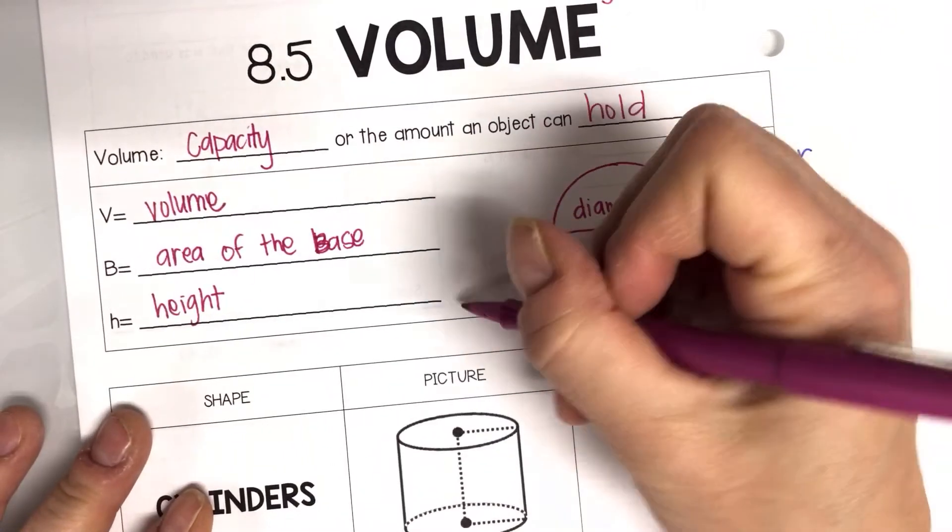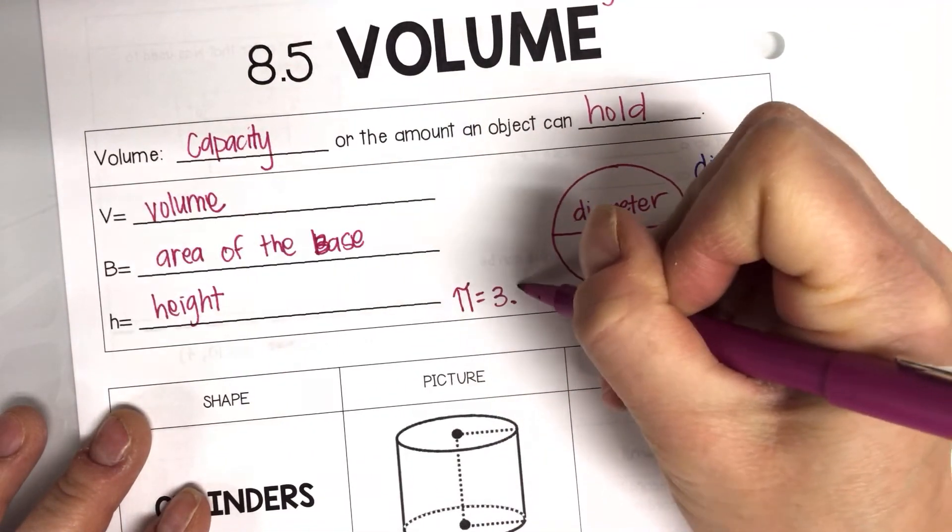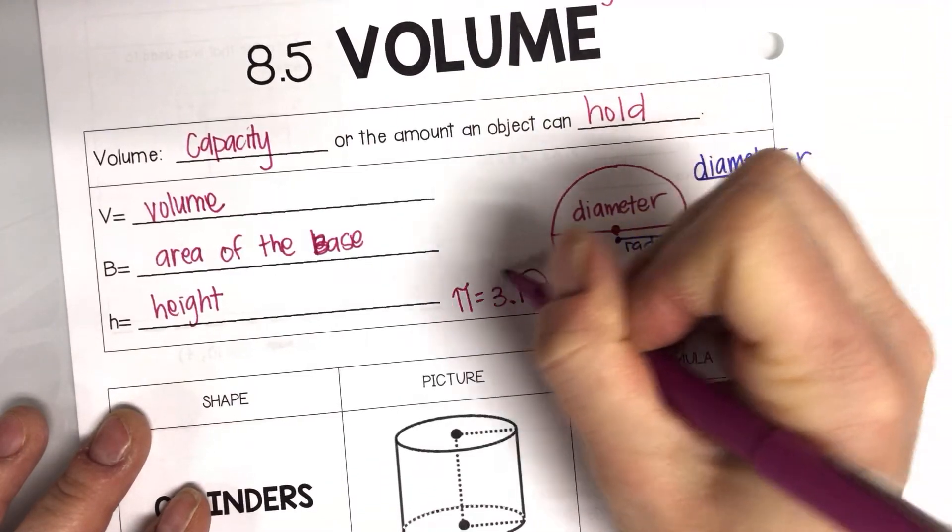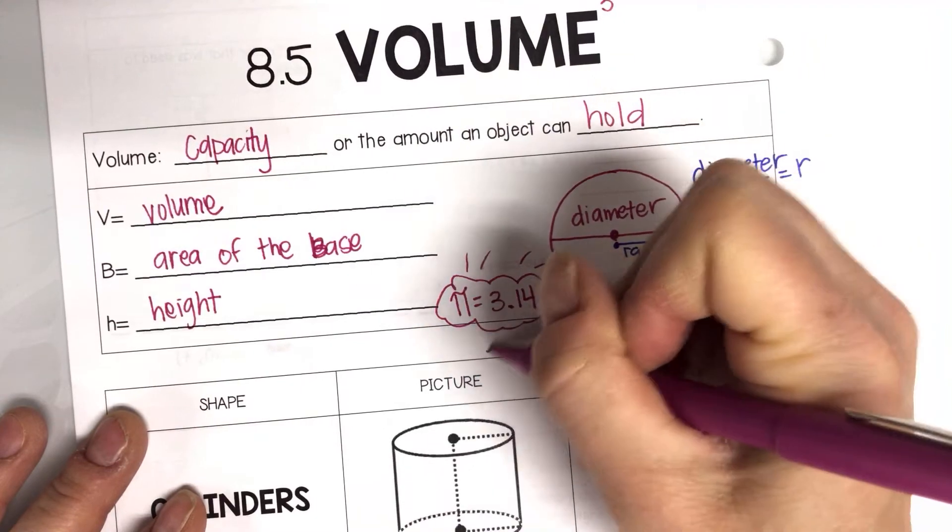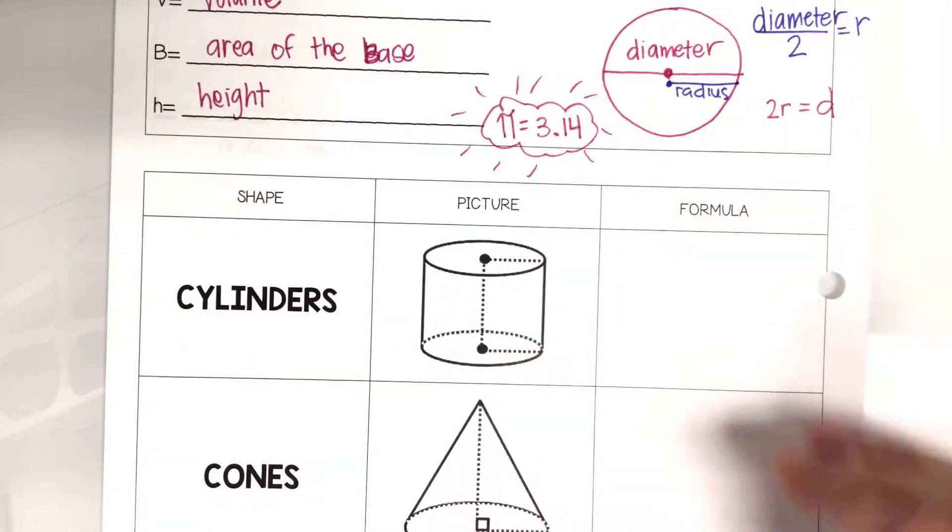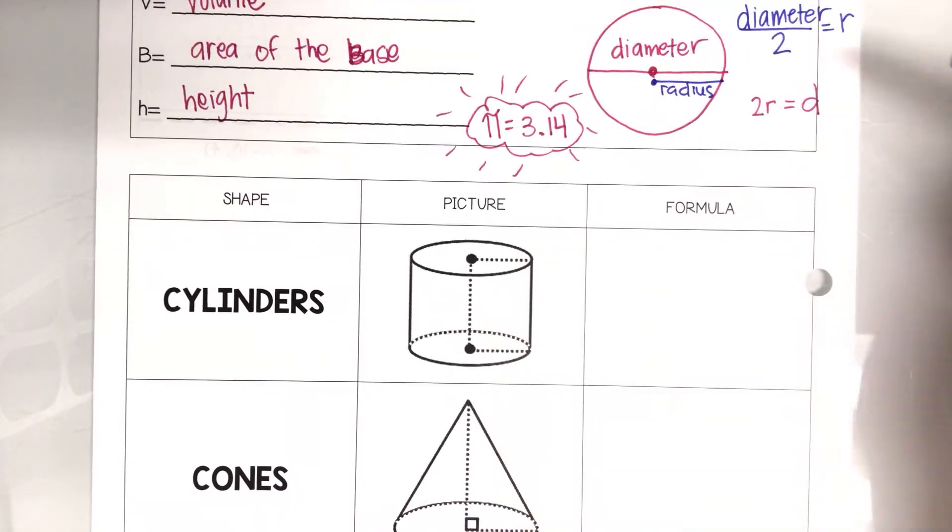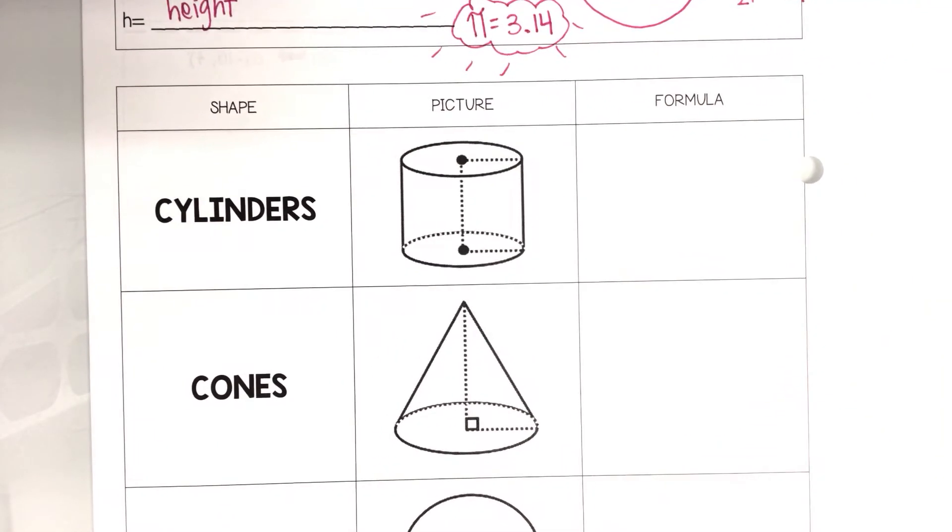The other thing is we are going to use for pi, we are going to use 3.14. This is super important, because if you don't use it, you may get a different answer and it will be marked wrong. When you put it in the computer, sometimes the answers are slightly different, that it will be different enough that it will mark it wrong.